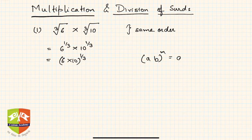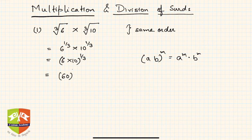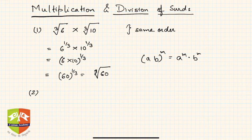The law used is: a·b to the power m equals a to the power m into b to the power m. So this becomes six into ten, all to the power one-by-three — which is 60 to the power one-by-three, or the third root of 60. In this example the order was the same, so it was straightforward.